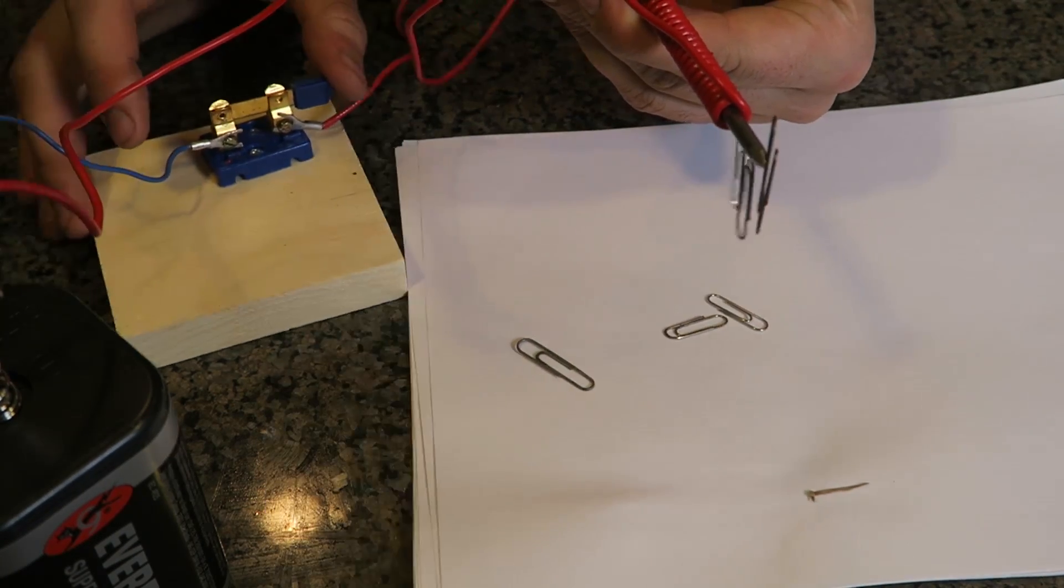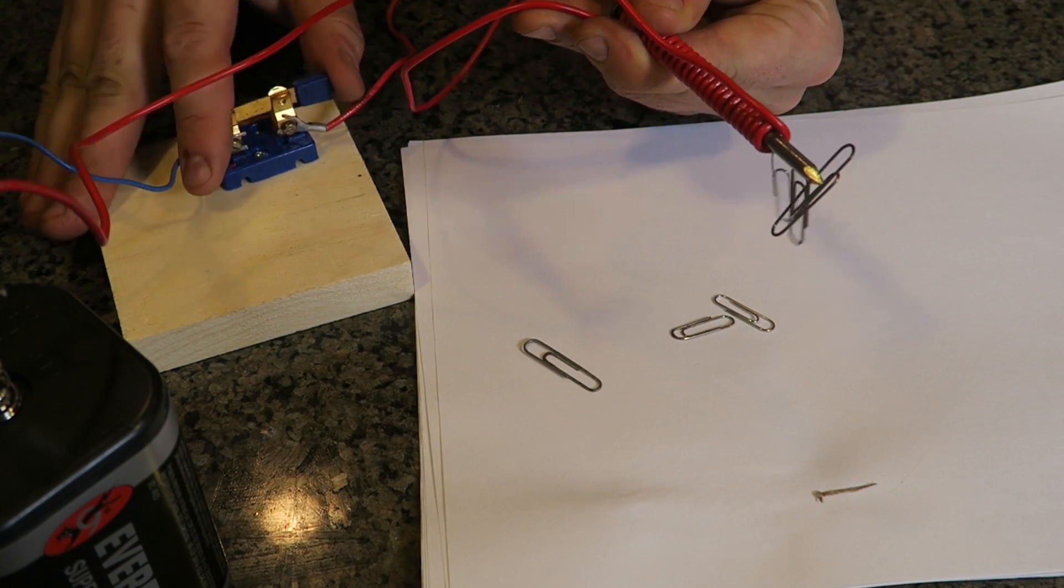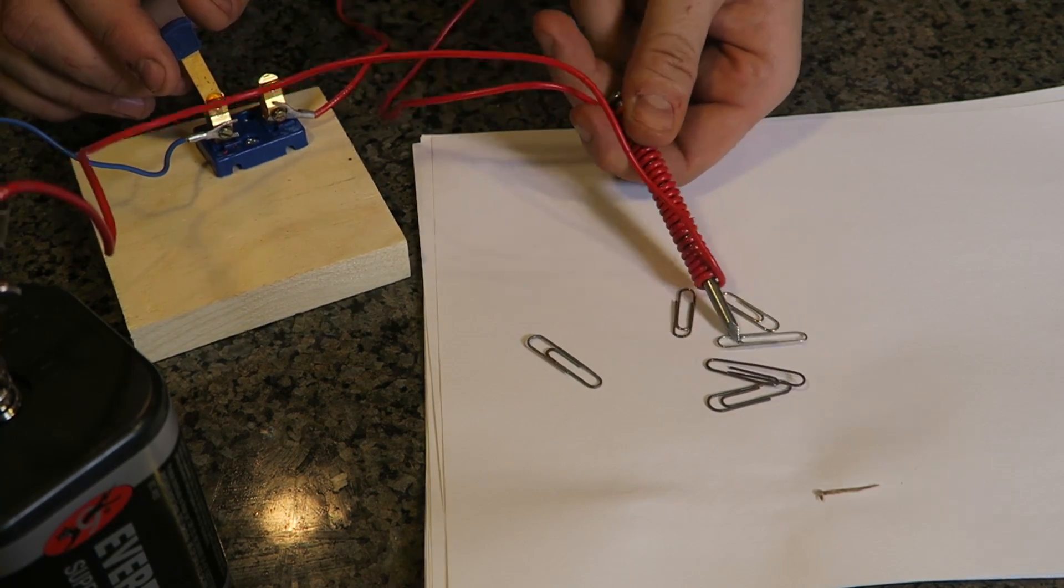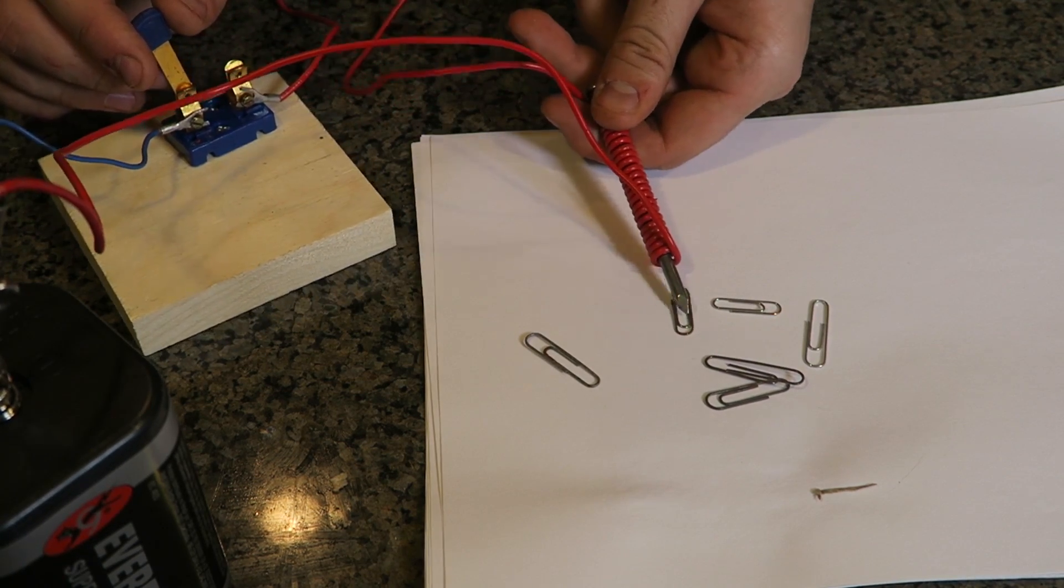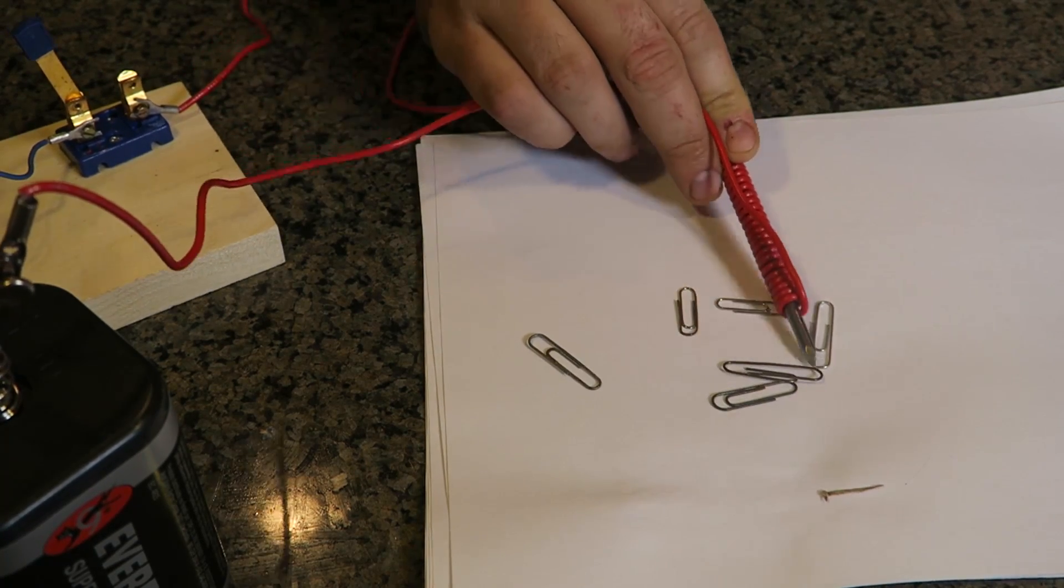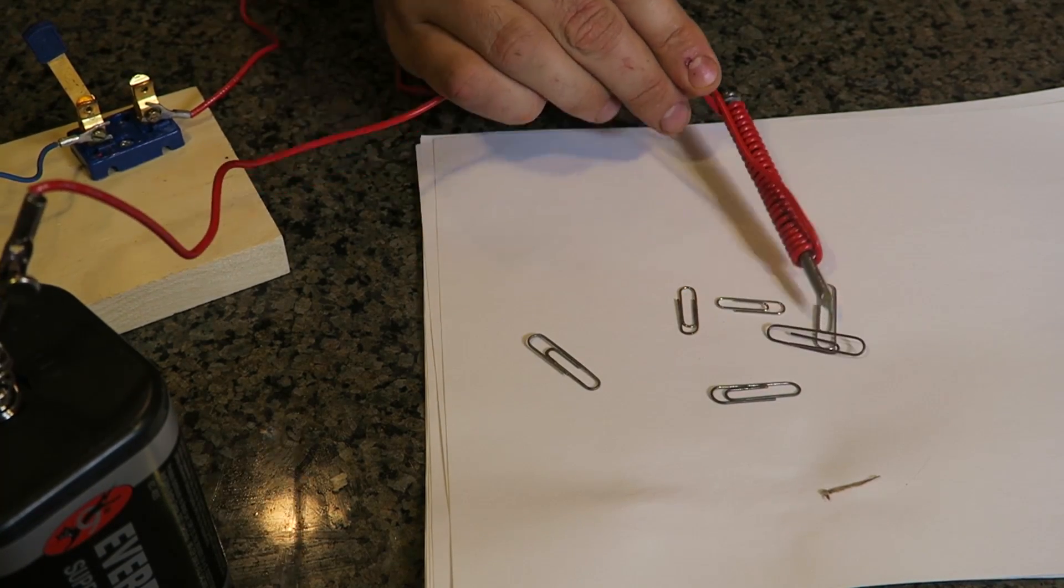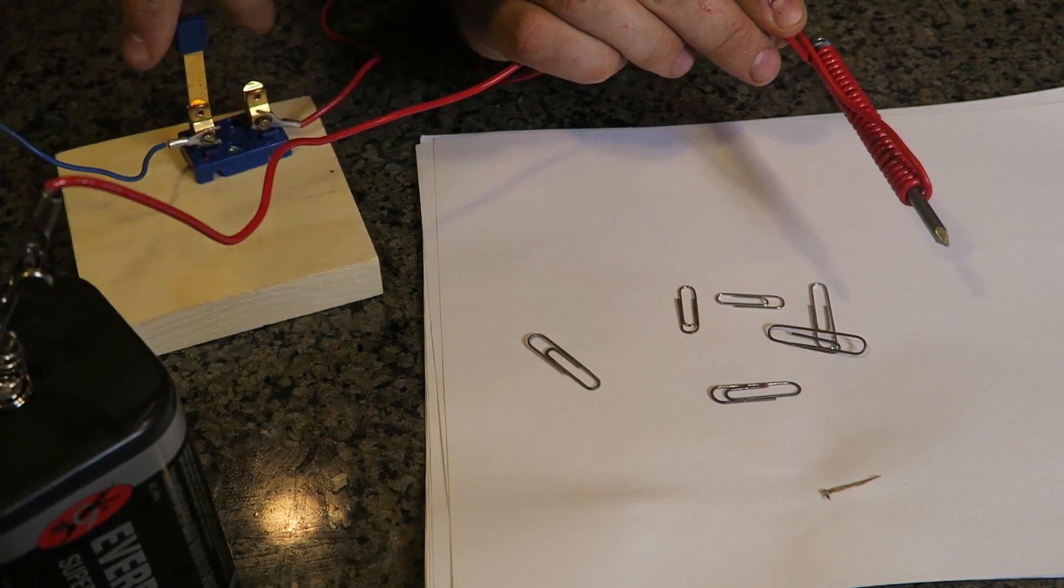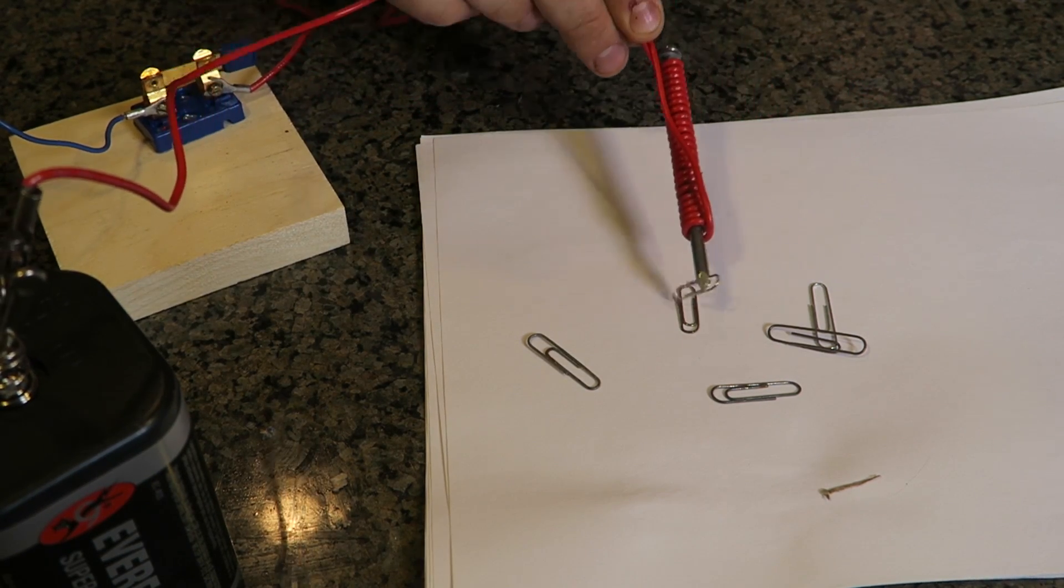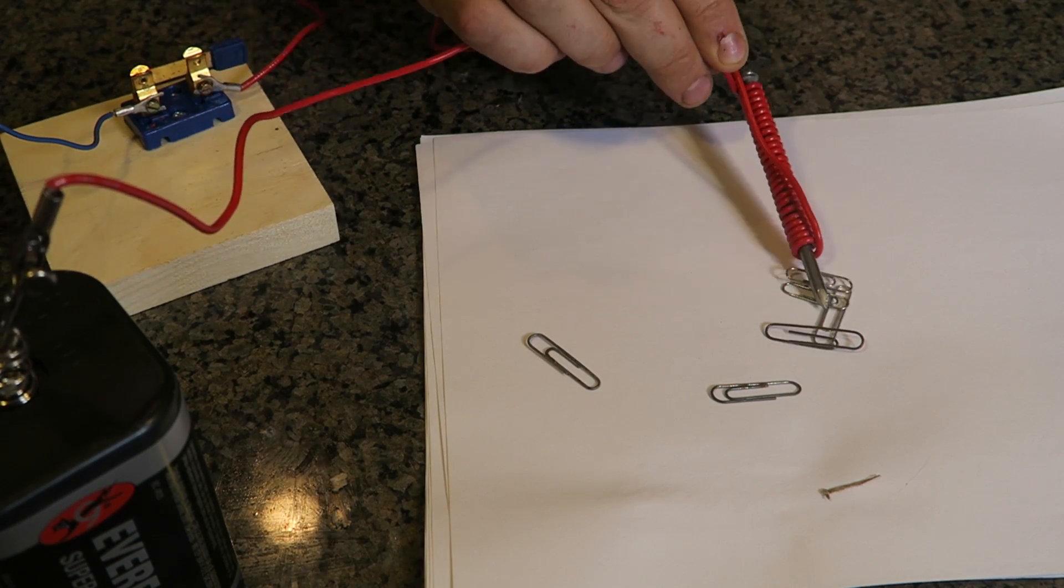But as soon as I turn it off or unplug the wires, let's see what happens. Boom. They fall off. You see, they're not magnetizing anymore. So let's try to magnetize it. And you see, it does not magnetize anymore. But once I connect them together again, boom. They magnetize again really easily.